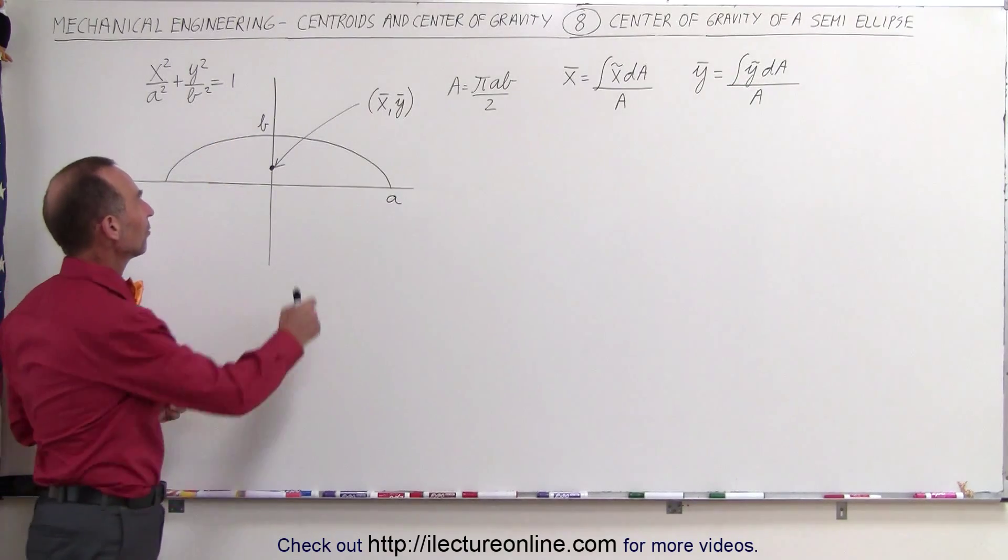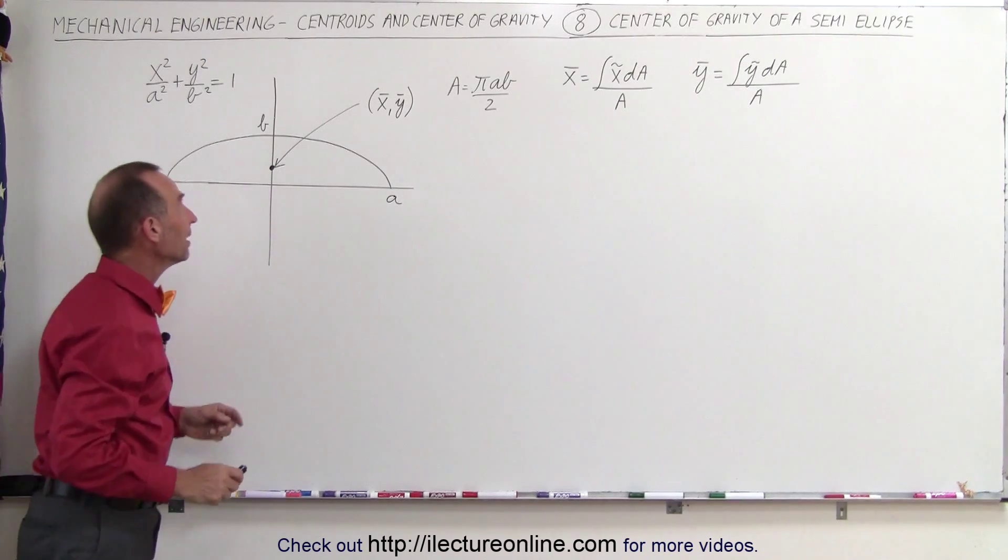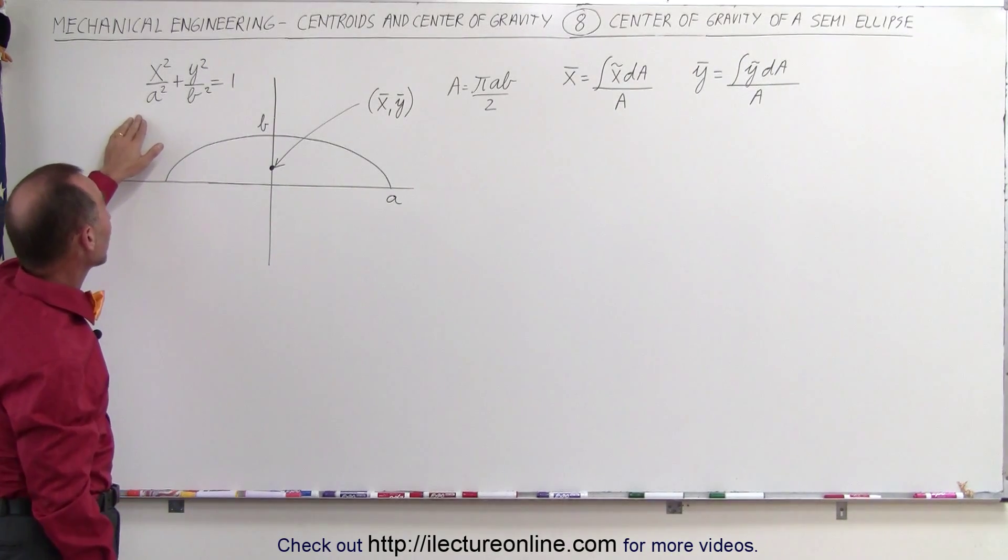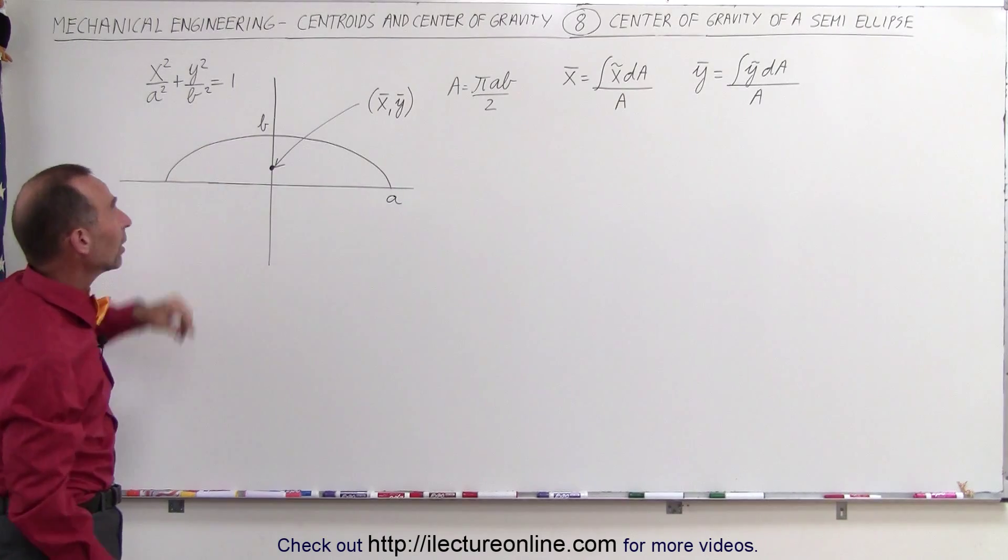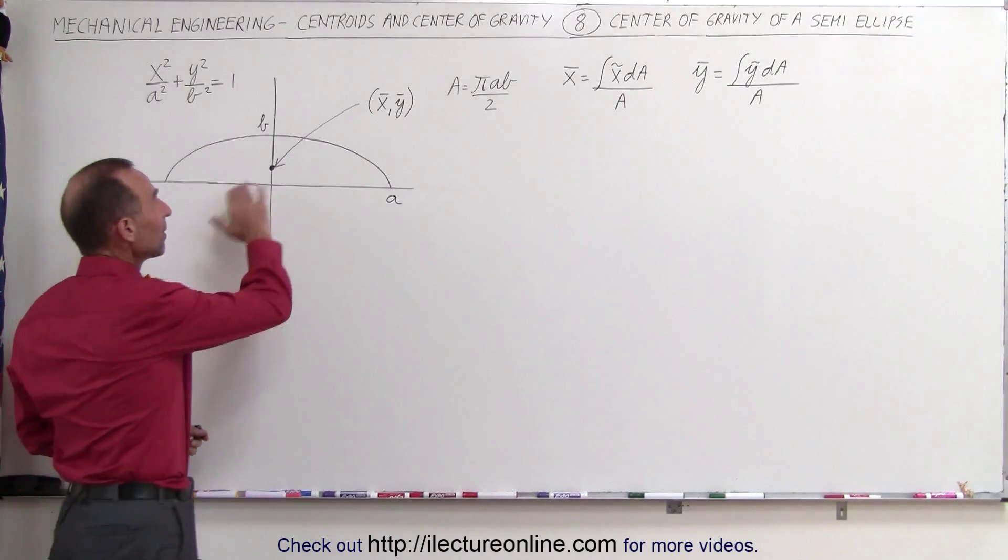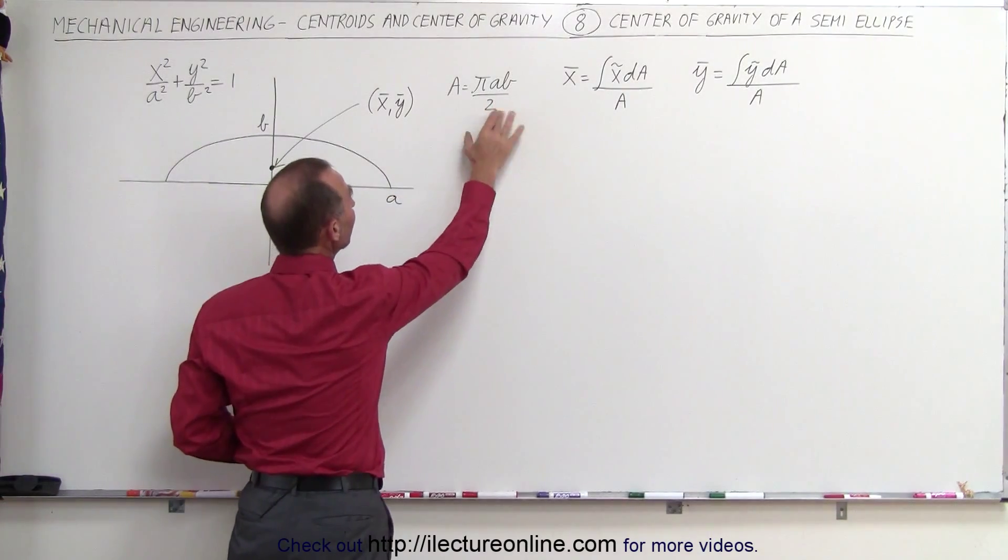The height is b. The width from the origin to the side is a. The equation is x² over a² plus y² over b² equals 1. And of course the area of a semi-ellipse is πab divided by 2.